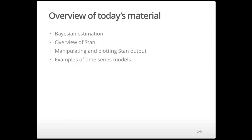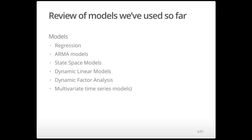The switch to Stan occurred maybe in 2015 or so, and we've been developing it since. Every time we do this, the kinds of models available and user-friendliness increases quite a bit. I've broken this into a univariate and multivariate lecture on Tuesday and Thursday. Today we'll largely talk about univariate regression type models, ARMA models — autoregressive or moving average models. We'll talk about state-space models and dynamic linear models where we have a random walk in an intercept or slope parameter, and then on Thursday we'll get into dynamic factor analysis and multivariate time series models.